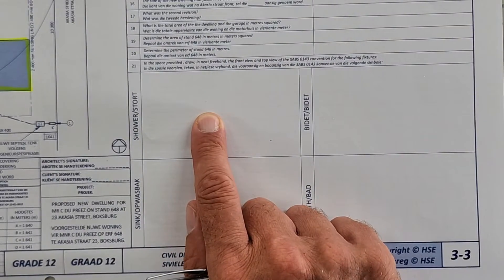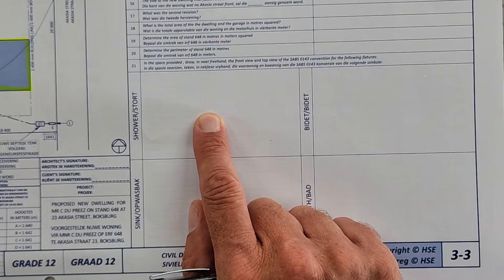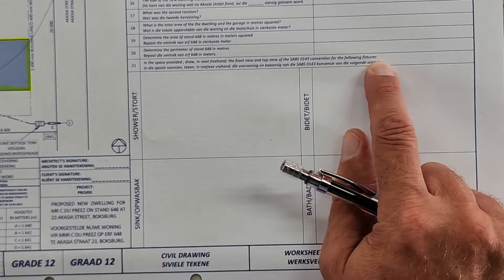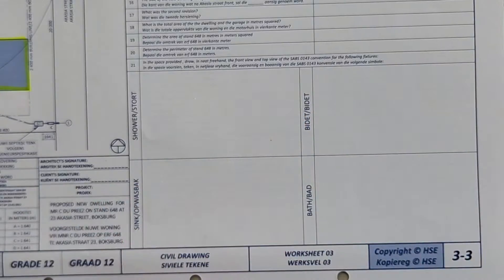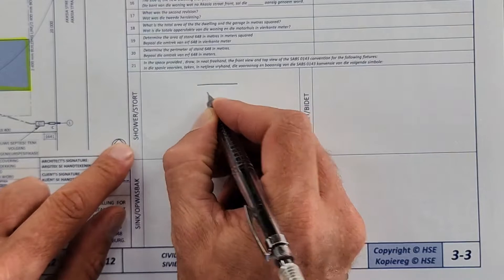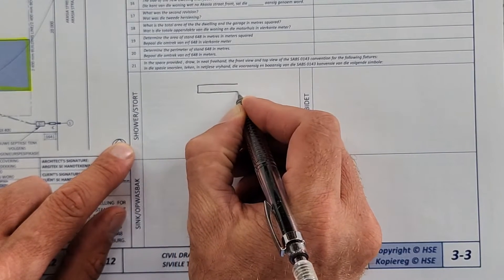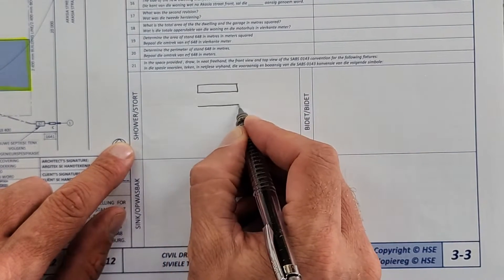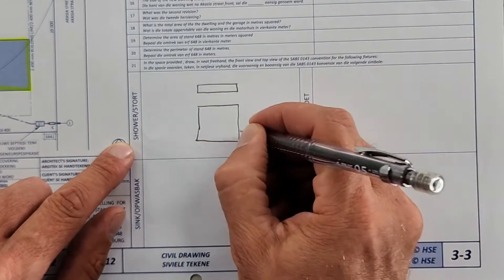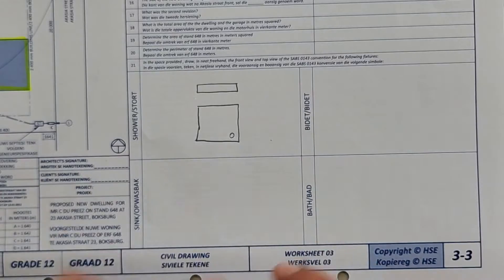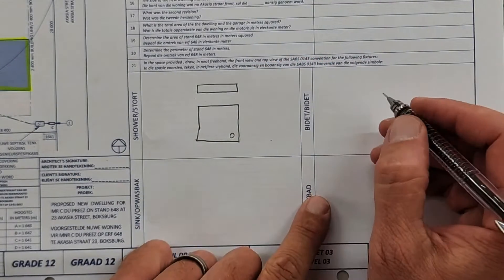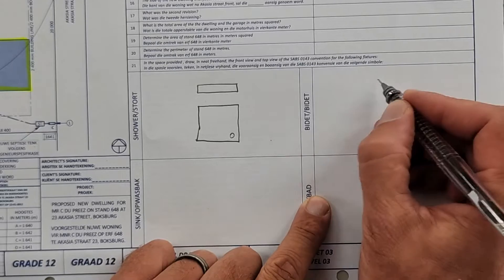In the space provided draw a neat freehand the front view and top view of the SABS 0143 convention for the following pictures. Let me draw them with you. You have to draw the front view and top view. So on the front a shower, that is just a footing, the footing tray. And the top of a shower is a square with a circle in it. There is no other lines, just that.